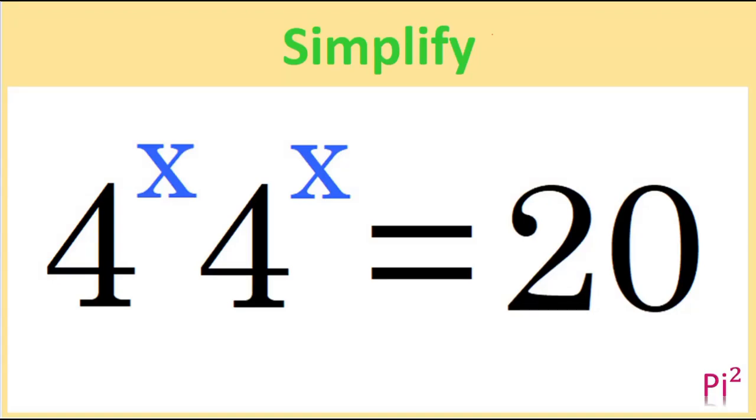OK, 4 to the x multiplied by 4 to the x equals 20. How would you solve this?